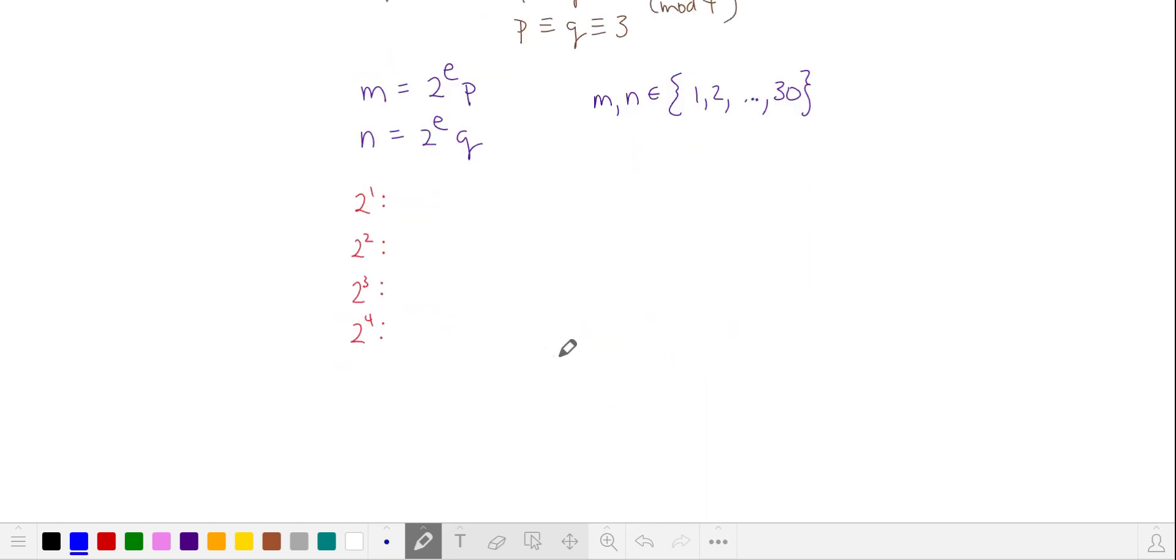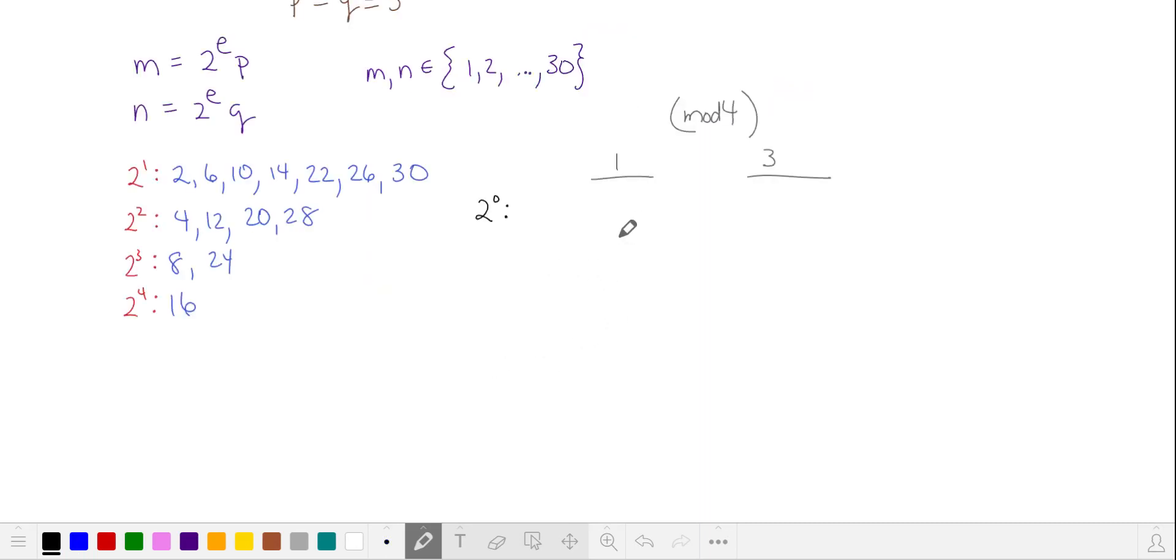Let's divide up our even numbers into the powers of 2 in their prime factorization. Let's combine these powers of 2 with the odd primes that give us 1 and 3 in mod 4. Here are the odd numbers divided up into their mod 4 equivalents. We have 8 that are equivalent to 1 in mod 4 and 7 that are equivalent to 3.